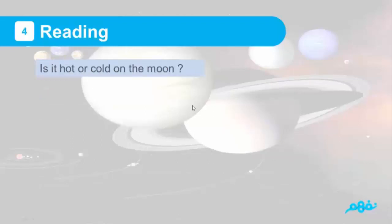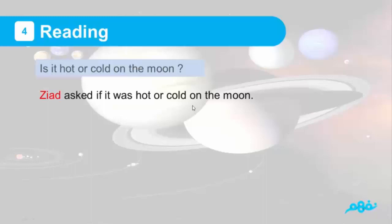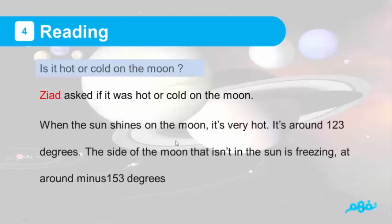Is it hot or cold on the moon? Ziyad asked if it was hot or cold on the moon. When the sun shines on the moon, it's very hot — around 123 degrees. The side of the moon that isn't in the sun is freezing at around minus 153 degrees.